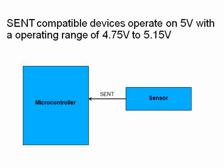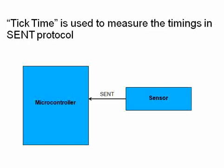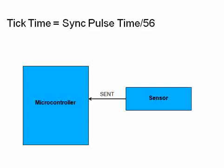The most important timing specification of the SENT protocol is called tick time. Tick time is a very important specification — when you select a sensor with a SENT interface, it characterizes the performance of the sensor. Tick time is defined as the sync pulse time divided by 56.